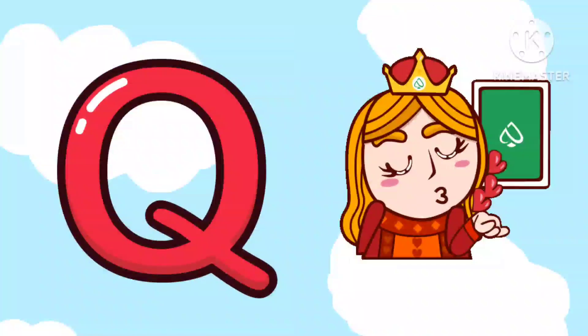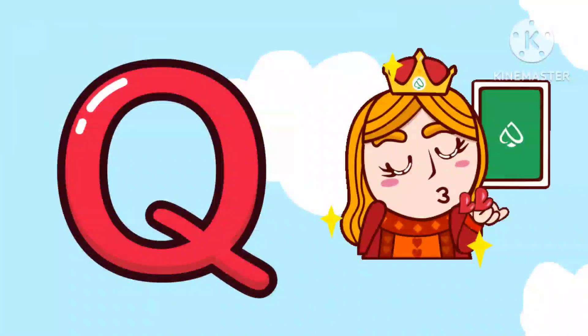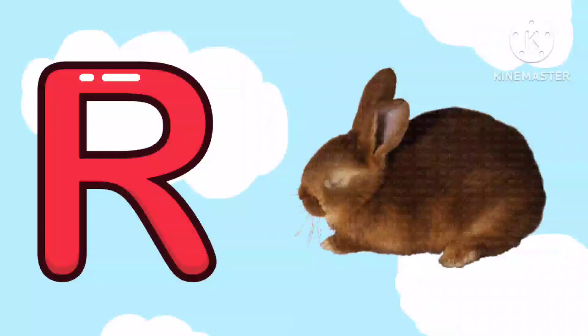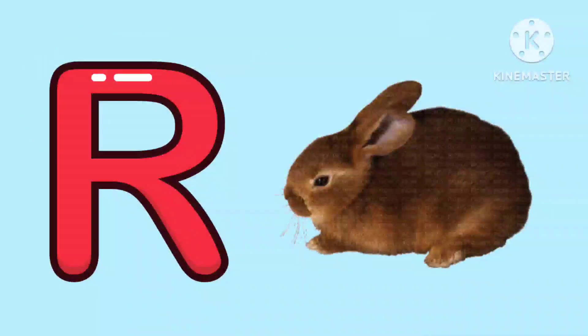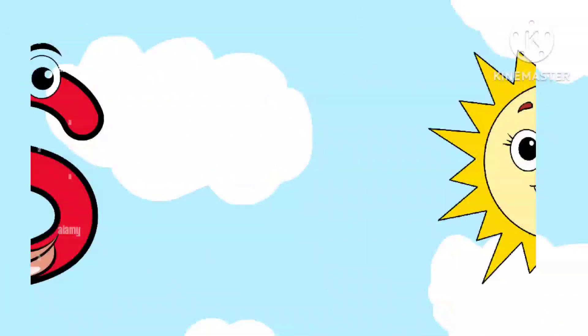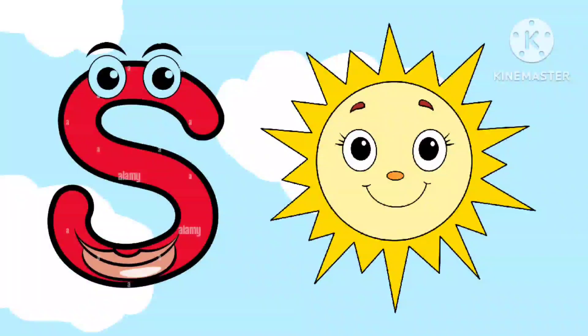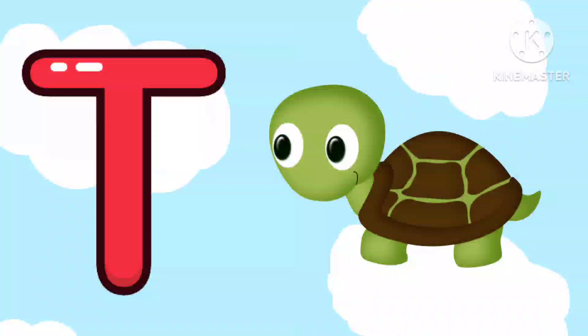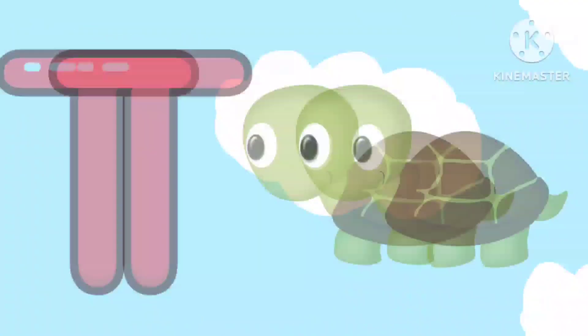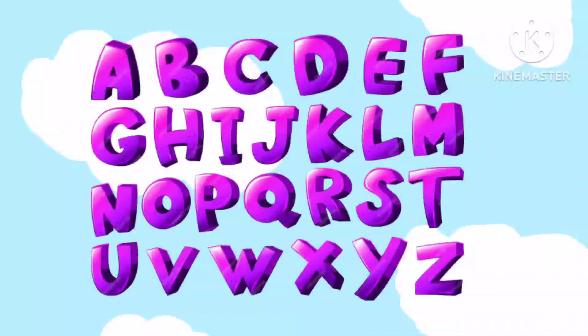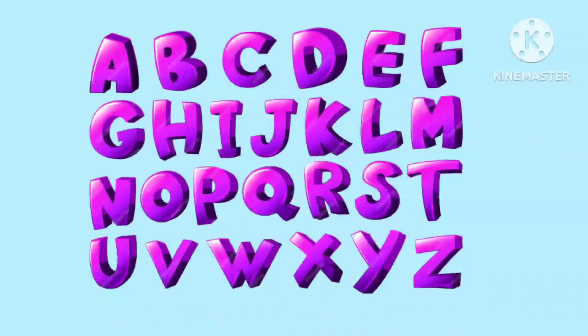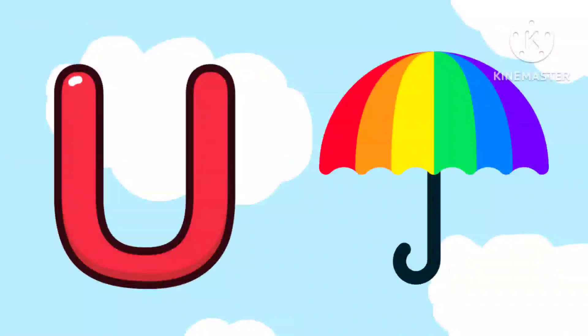Q is for Queen, Q, Q, Queen. R is for Rabbit, R, R, Rabbit. S is for Sun, S, S, Sun. T is for Toad, T, T, Toad.